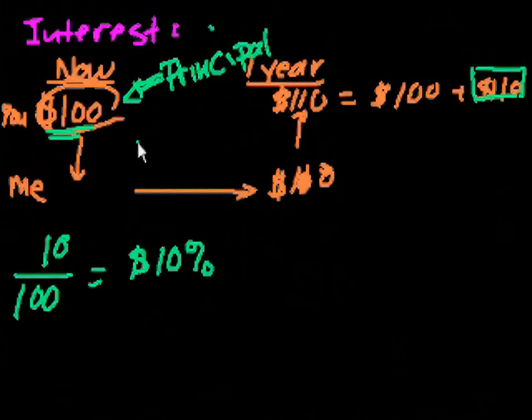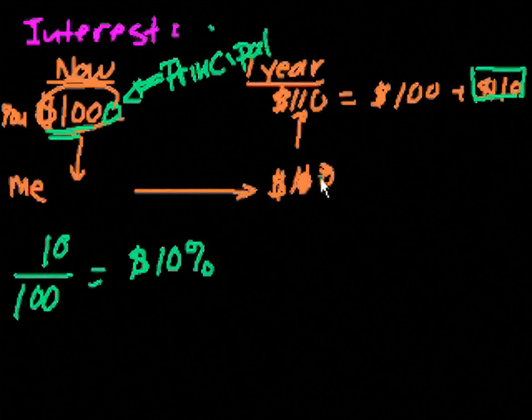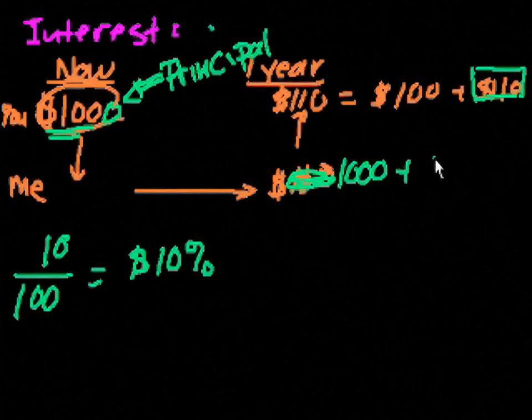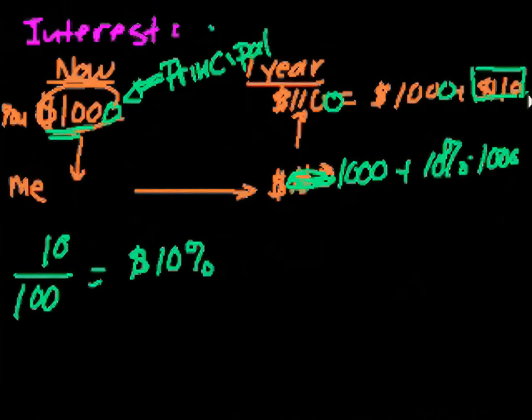And likewise, for any amount of money, say you're willing to lend me any amount of money for a 10% interest, well then if you were to lend me $1,000, then the interest would be 10% of that, which would be $100. So then after a year, I would owe you $1,000 plus 10% times $1,000, and that's equal to $1,100. In this case, $100 would be the interest, but it would still be 10%.